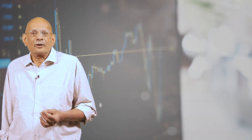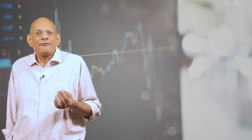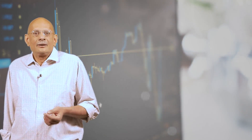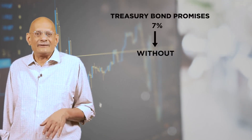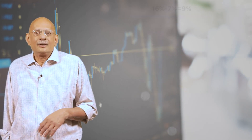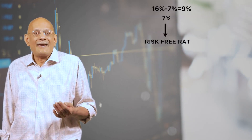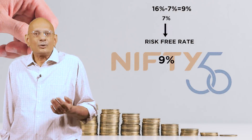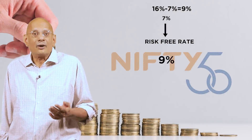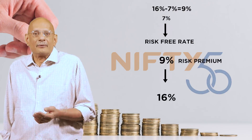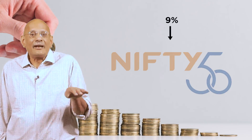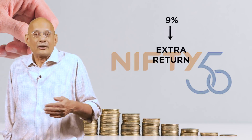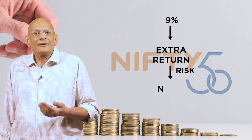Let's compare this with the return on the Treasury bond and introduce a couple of other notions that you will find useful. The Treasury bond promises you a rate of about 7% these days with none of this volatility — you can think of this 7% therefore as a risk-free rate. The extra 8 or 9% return that you earn from equities, from owning the Nifty outright on average, can be thought of as a risk premium: it is the extra return above that risk-free rate that you have historically earned for taking on the risk that comes with Nifty ownership.